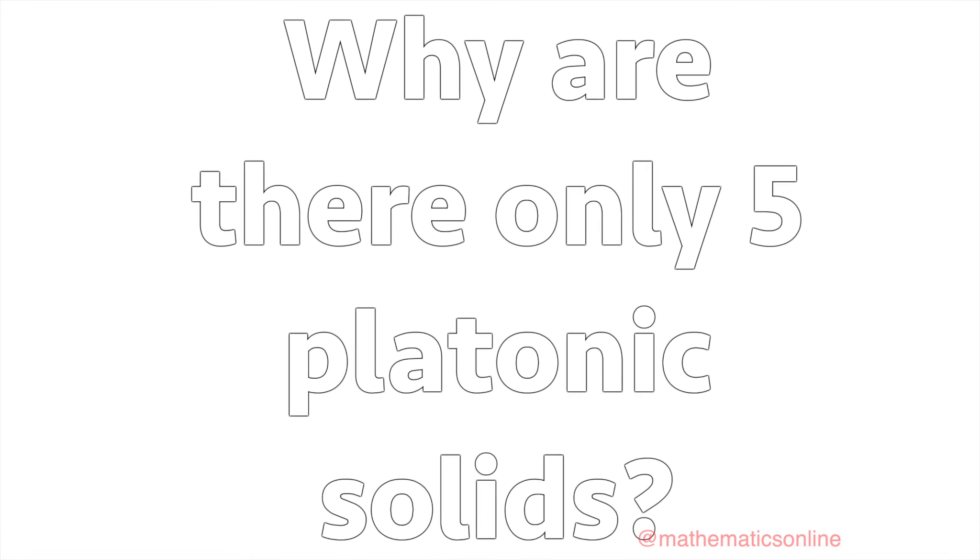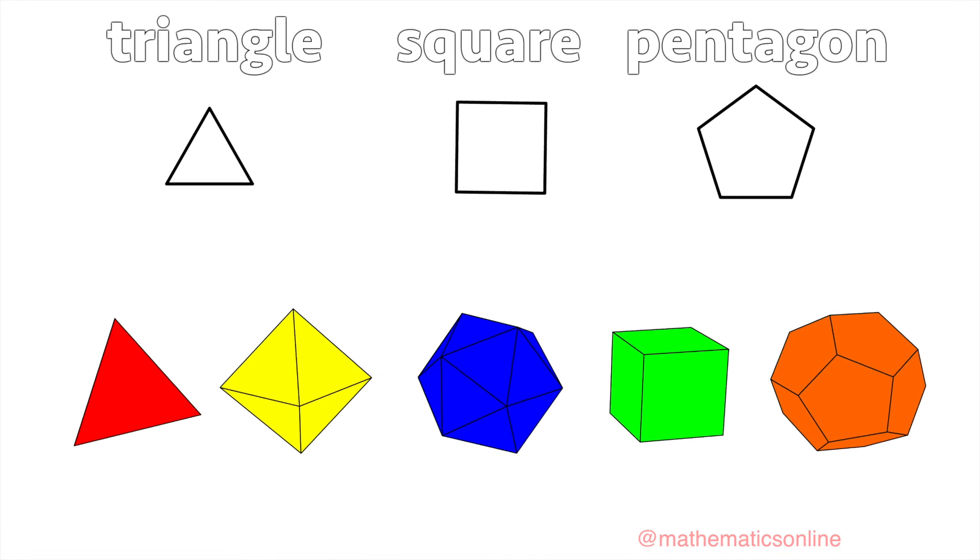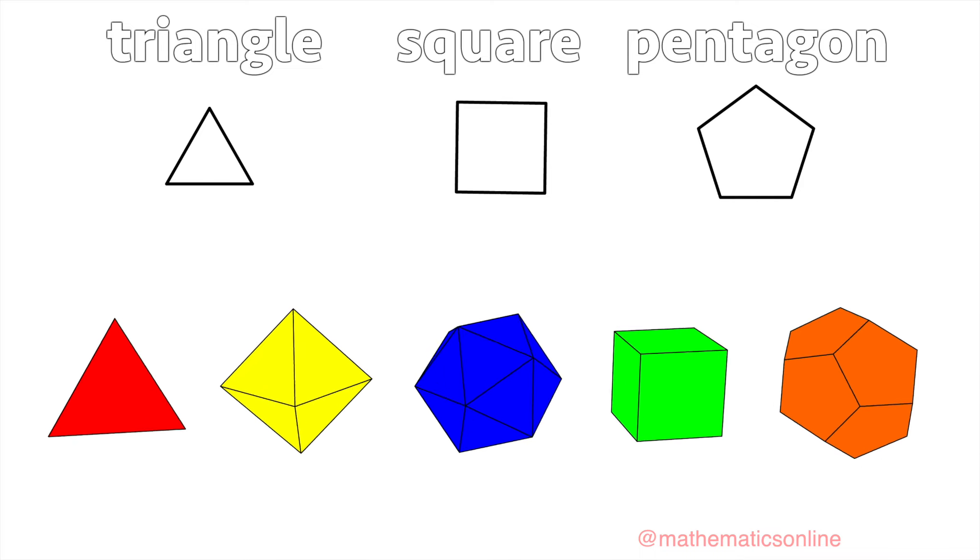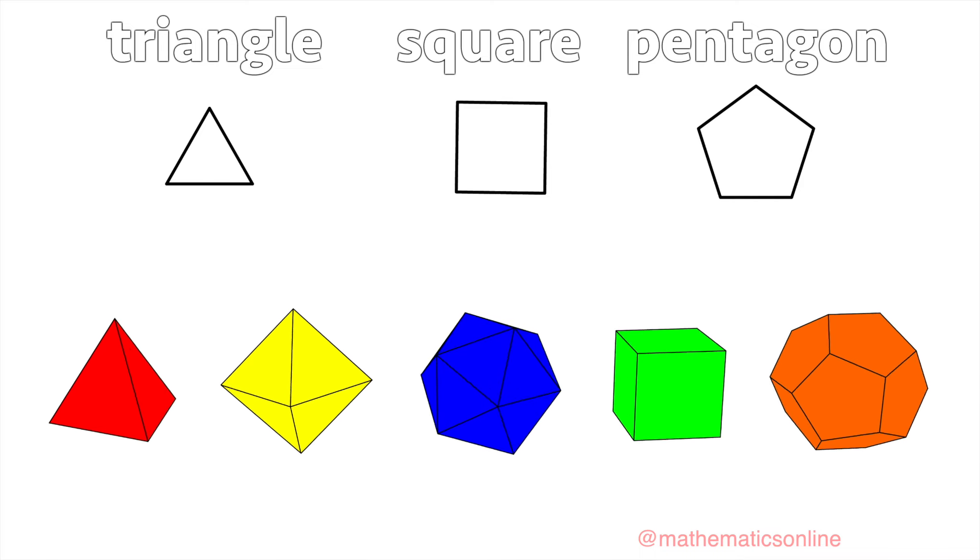Why are there only five Platonic solids? The Platonic solids must consist of regular polygons. We'll start with the simplest regular polygon, the triangle.